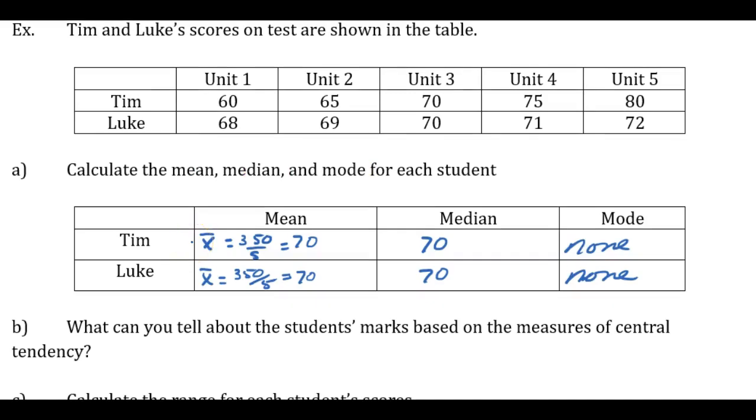Now you've had a chance to calculate the mean, median, and mode for each. Remember that the symbol for mean is X bar. And to find the mean, we add up each of the test scores. So for Tim, we added all the scores. You get a total of 350, and divide by the number of scores. So 350 divided by 5, and he has a mean of 70. Luke has the same mean when you calculate it. The median, the scores are already ranked from lowest to highest in order. And 70 turns out to be the middle for both scores. And mode, there isn't one.